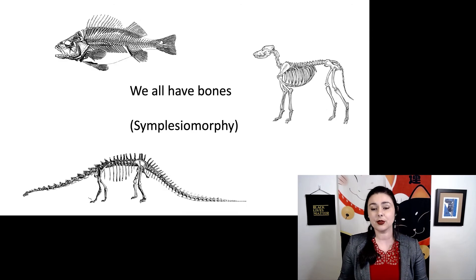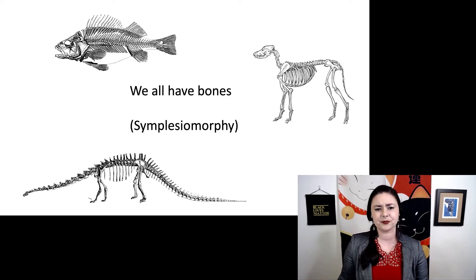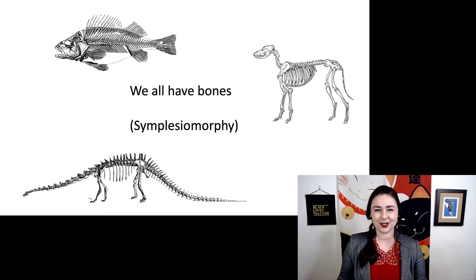This is an example of a symplesiomorphy. This means a shared ancestral trait. It is present in more than one taxa and it's relatively old and it's probably present in the ancestor of the tree that you're looking at. So another example is all of these creatures here, our bony fish, our dog, and our dinosaur all have bones. So this is a symplesiomorphic character.